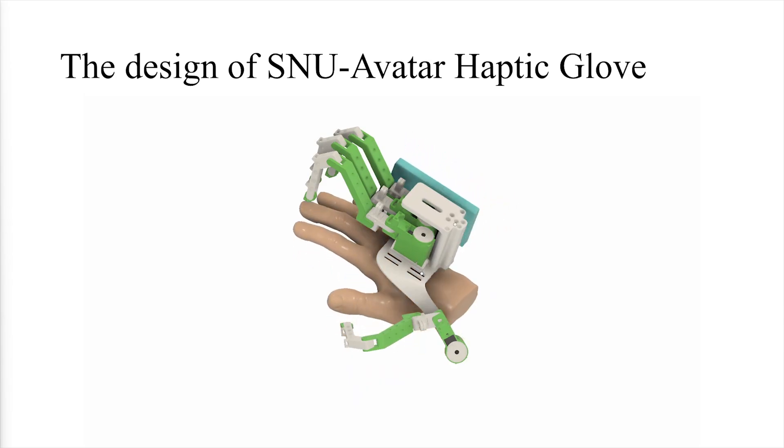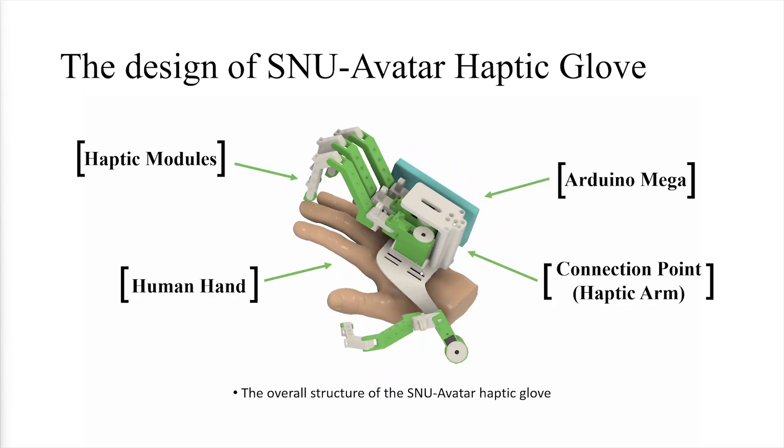Next, the structure of the haptic glove and its key connectivity features will be explained. The haptic glove is equipped with a total of four haptic modules. Additionally, the glove plays a crucial role in external connectivity, which includes integrating with both the user's hand and the haptic arm, allowing for smooth interaction between the glove and the robotic system.